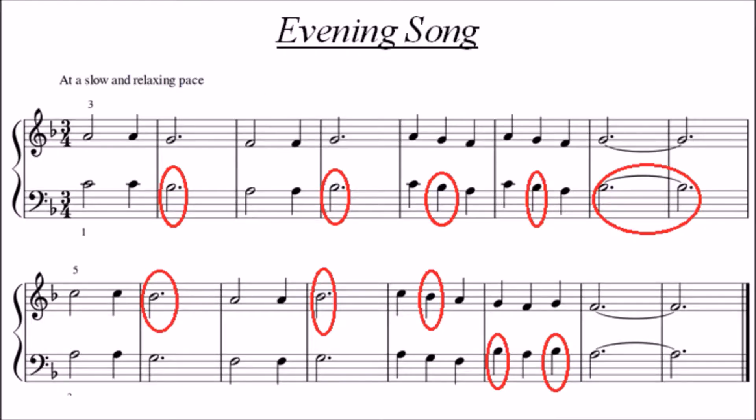In this piece, Evening Song, there is a key signature of B-flat, so every time you get to the note B, it needs to be played as B-flat even though there is no flat sign on the actual note.